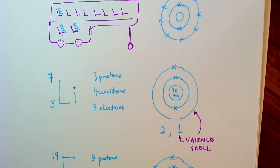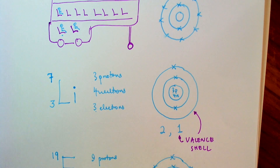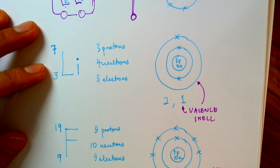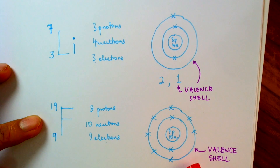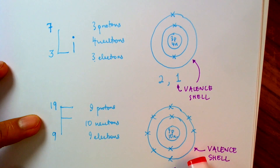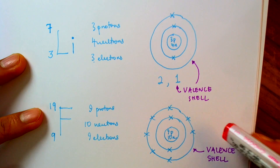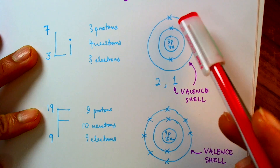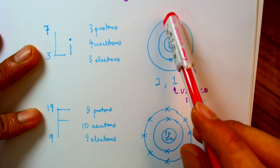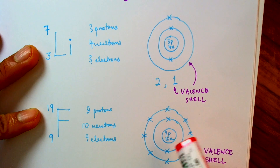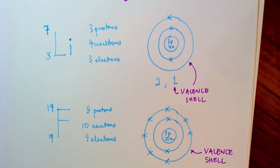This idea of atoms wanting to have a full outer shell is key to understanding how they react together. You might have a barter system where lithium says it wants to lose one electron to be stable, whereas fluorine says it needs one more to be stable. So lithium and fluorine could be really good friends — lithium wants to give up one electron, fluorine wants to gain one, so lithium can give its electron to fluorine and they'll both be happy. Those are ideas we'll look at later on.